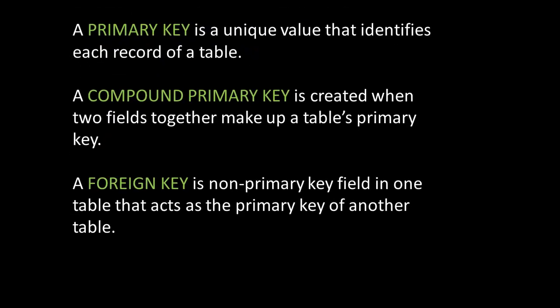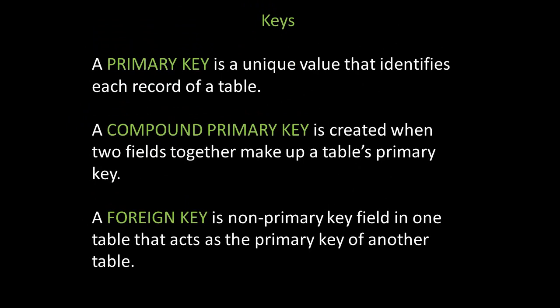A primary key is a unique value that identifies each record of a table — no other record has that same primary key. A compound primary key is created when two fields together make up a table's primary key. A foreign key is a non-primary key field in one table that acts as the primary key of another table.